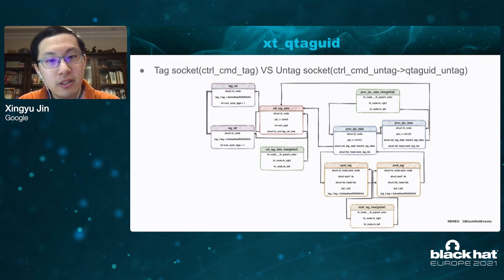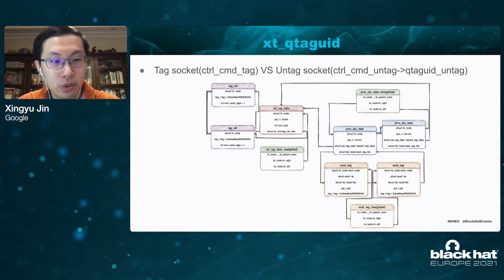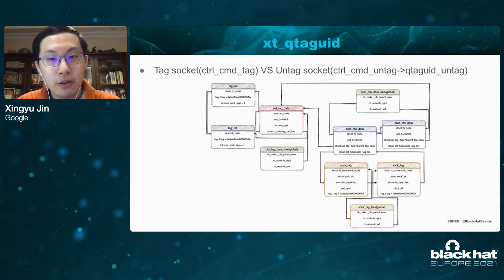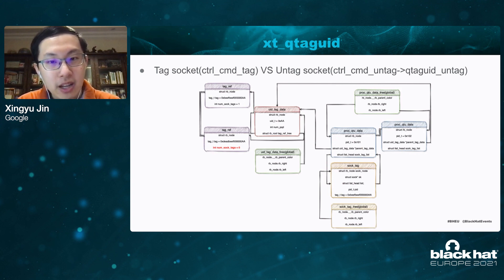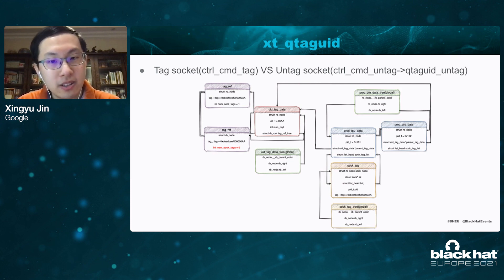Here is the overview of all the related kernel data structures while a socket is tagged. The module creates tag_ref and soc_tag structures. When a socket is untagged, the reference count in the tag_ref is decreased, and soc_tag is unlinked from the linked list and freed. When a user closes the module, all the related socket tag and proc_qtaguid data structures will be unlinked and freed.